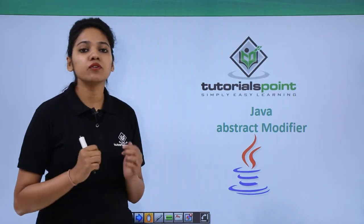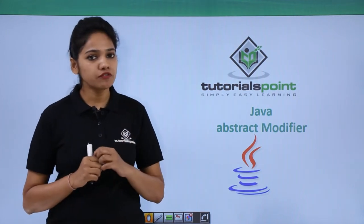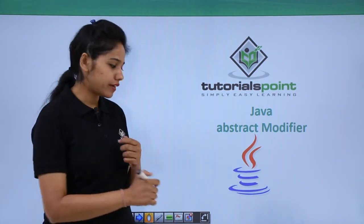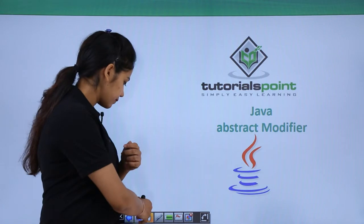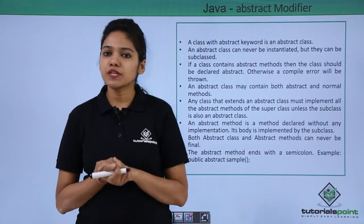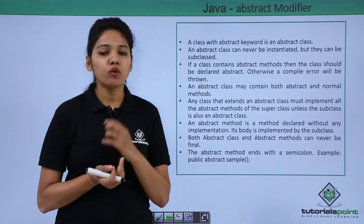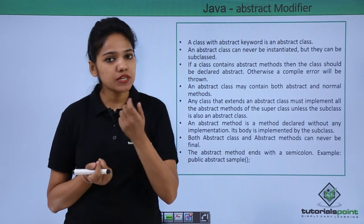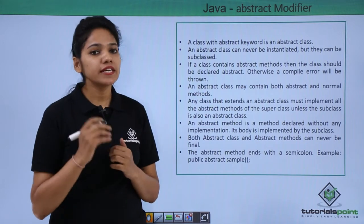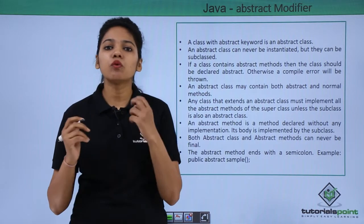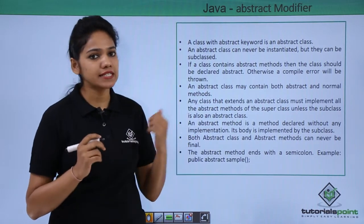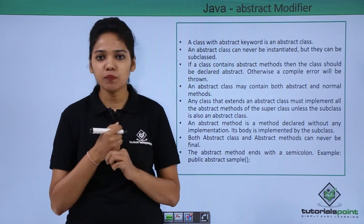The next type of a non-access modifier is the abstract modifier. What do you mean by abstract modifier? What is this abstract keyword and what does it do? Let us first understand what is an abstract keyword, then we'll understand the rest of the points.